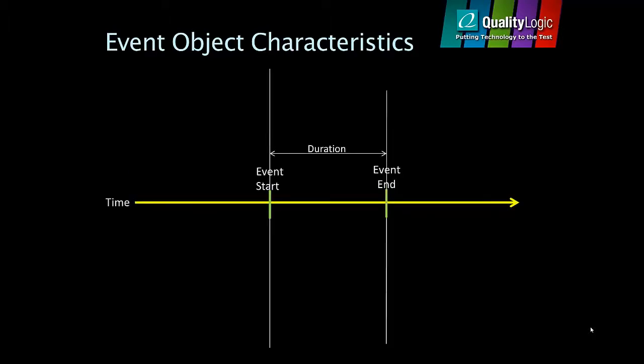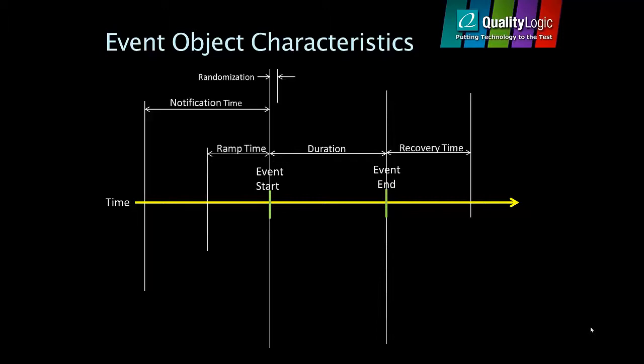This slide illustrates the characteristics of the OpenADR event object. Each event has a well-defined start time, duration, and an effective end time. Events may have durations that describe how the load shed associated with an event ramps up at the start of an event or recovers at the end of an event. Events can also optionally define a randomization window, which requires each VEN to randomly select a start time within the window so that devices do not initiate their load shed at the same instant in time.